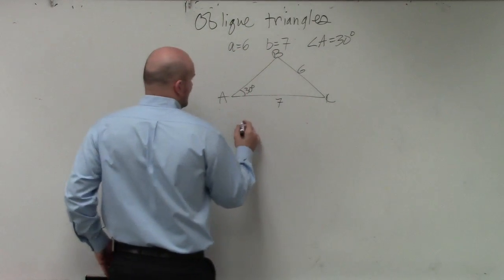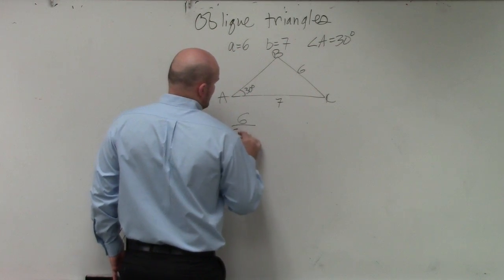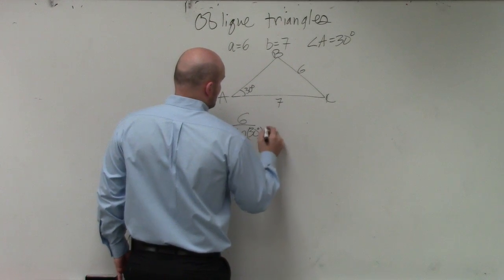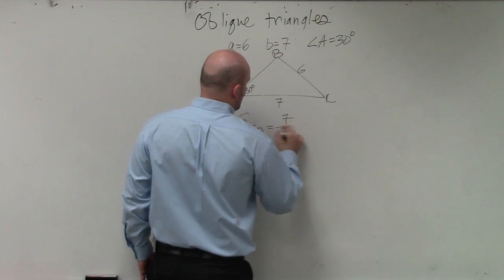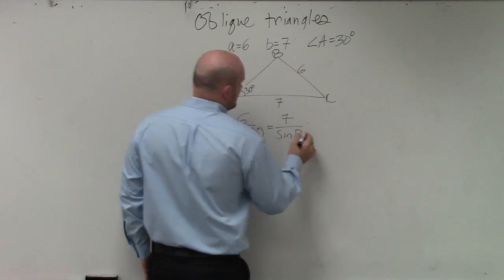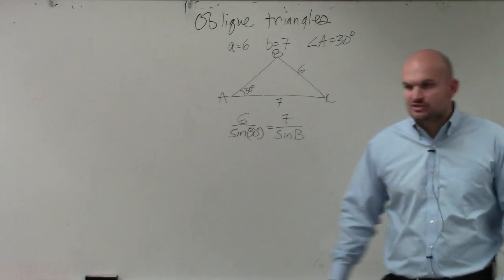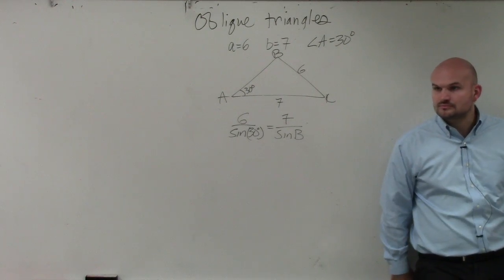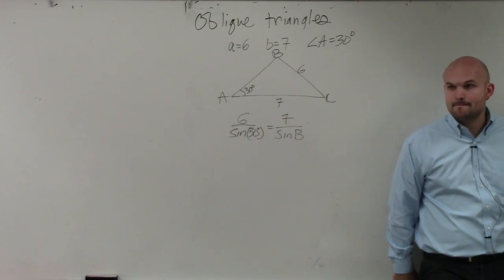So therefore, to do that, I have 6 over the sine of 30 degrees is equal to 7 over the sine of B. I'm not doing anything with C, just like the last problem. Does everybody at least follow me from this step? Is everybody OK with me on this step?